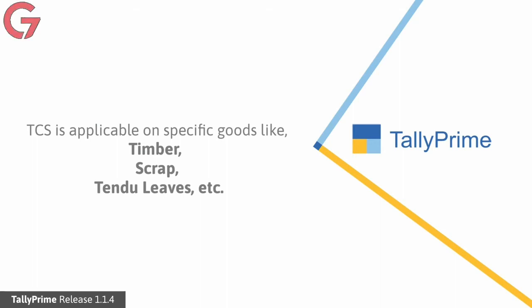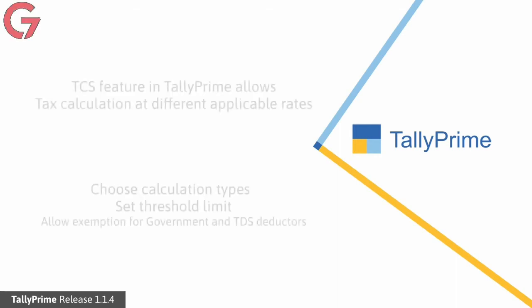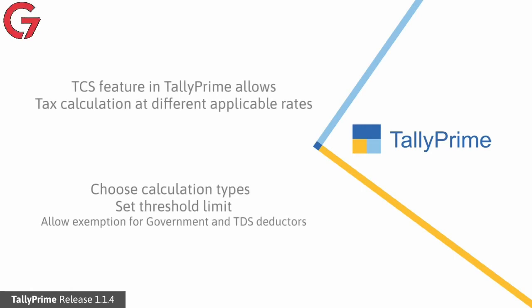Examples include timber, scrap, tendu leaves, and a few others. However, with the introduction of sale of any goods in Budget 2021, the TCS provisions have been amended to widen and deepen its tax base. The TCS feature in TallyPrime allows you to efficiently meet the compliance requirements of TCS.